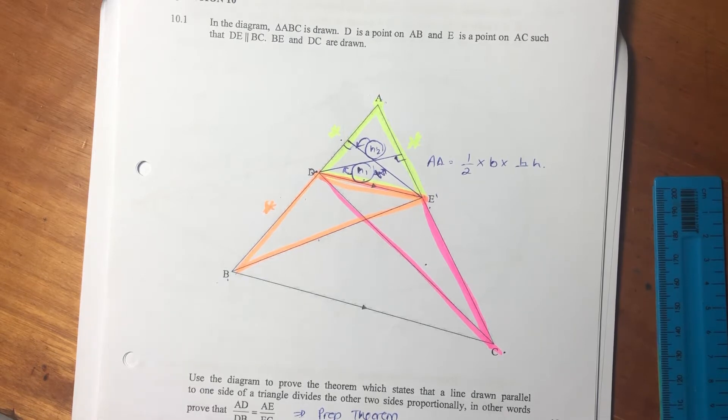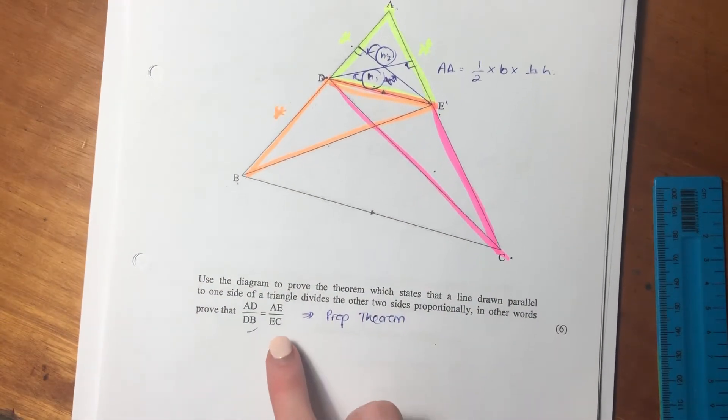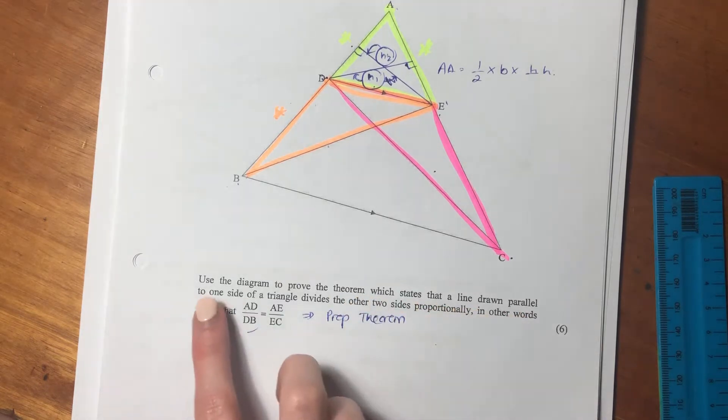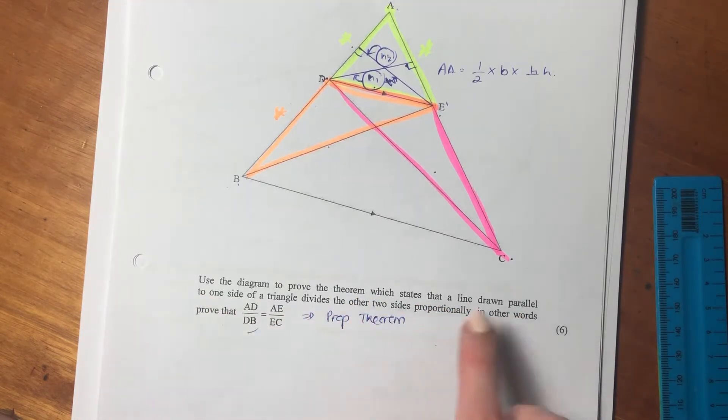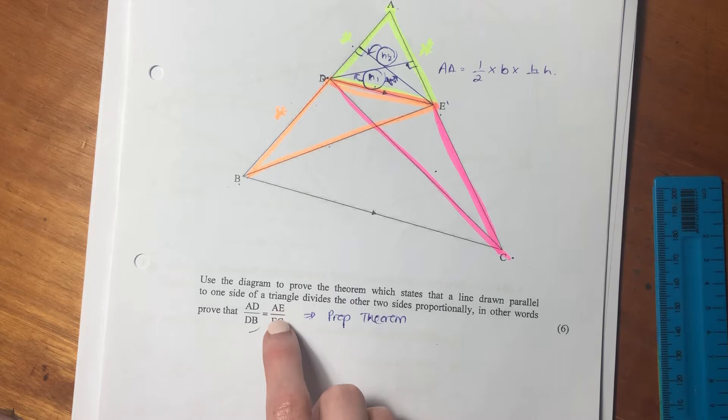D is a point on AB, and E is a point on AC, such that DE is parallel to BC. BE and DC are drawn. So then it says, use the diagram to prove the theorem, which states that a line drawn parallel to one side of a triangle divides the other two sides proportionally. In other words, AD over DB equals AE over EC.